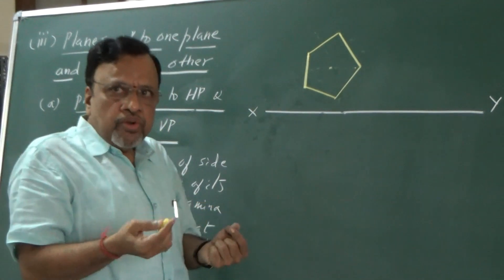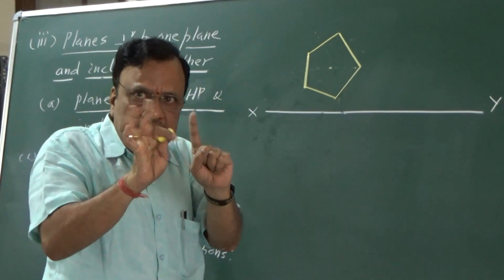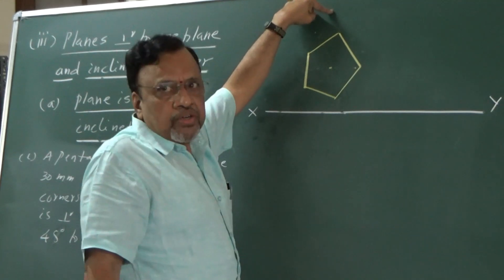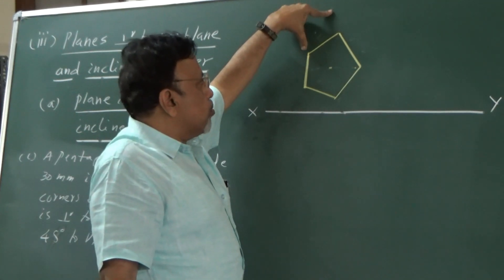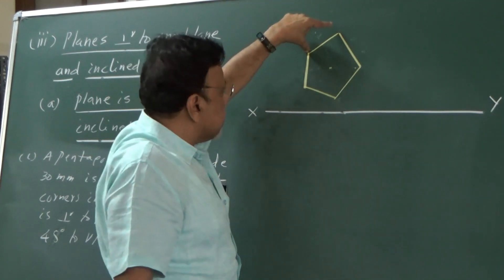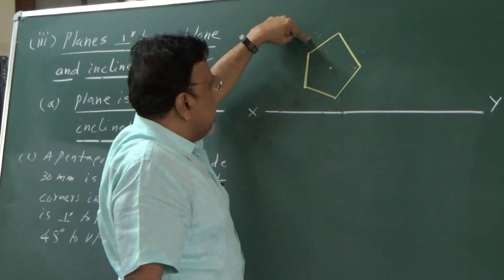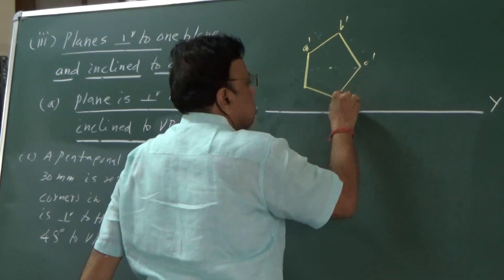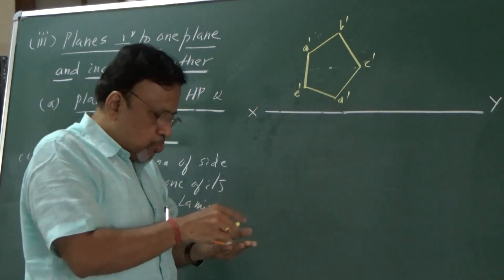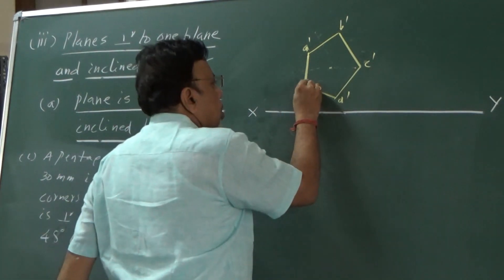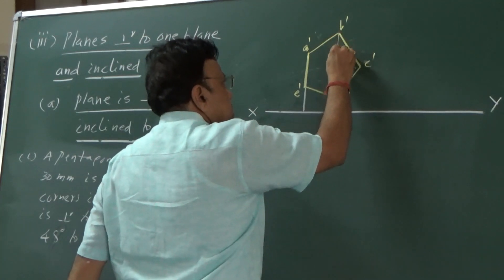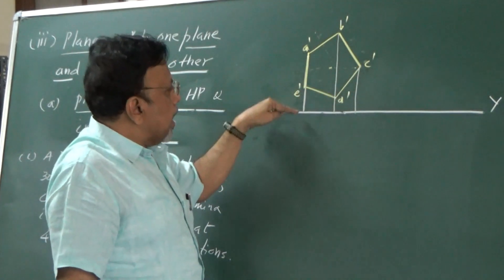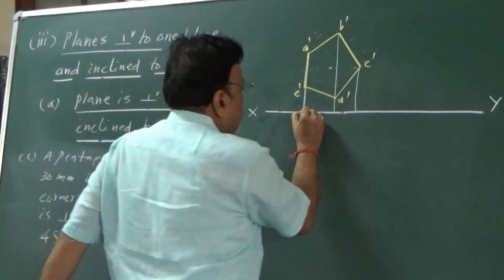I have drawn the pentagon. How do you name the points? You have to follow a particular trend. The observer always starts from the leftmost visible point in the clockwise direction. So let us say this is a', b', c', d', and e'. Then draw the corresponding top view. Since I want this particular corner to rest on VP, I will assume the entire lamina is in VP itself. That is the reason I am drawing the top view on the XY line itself.